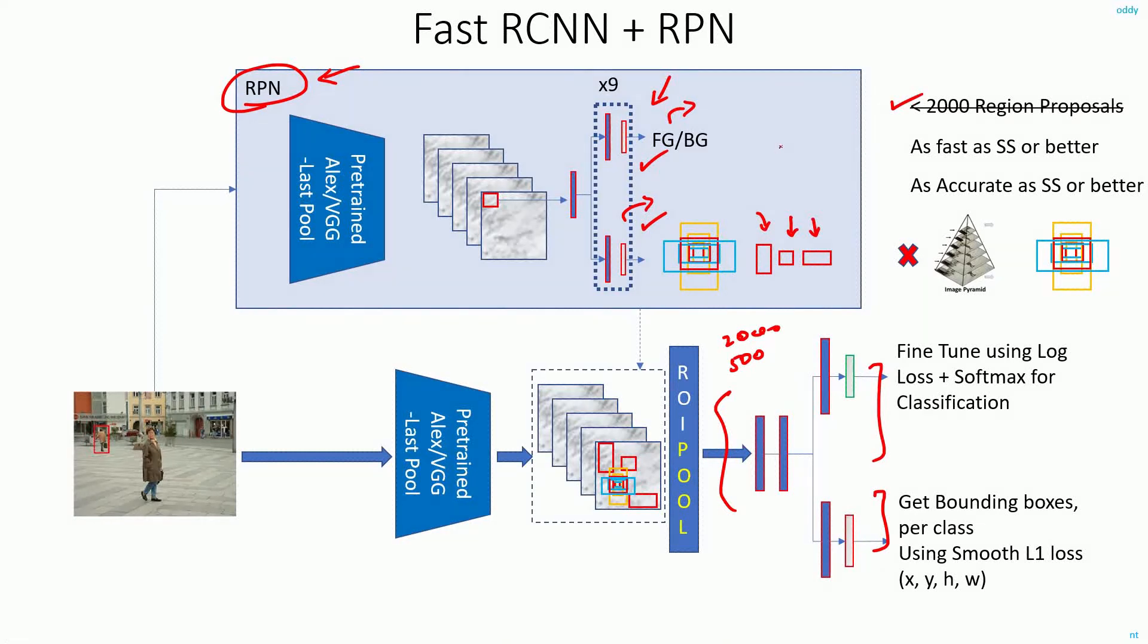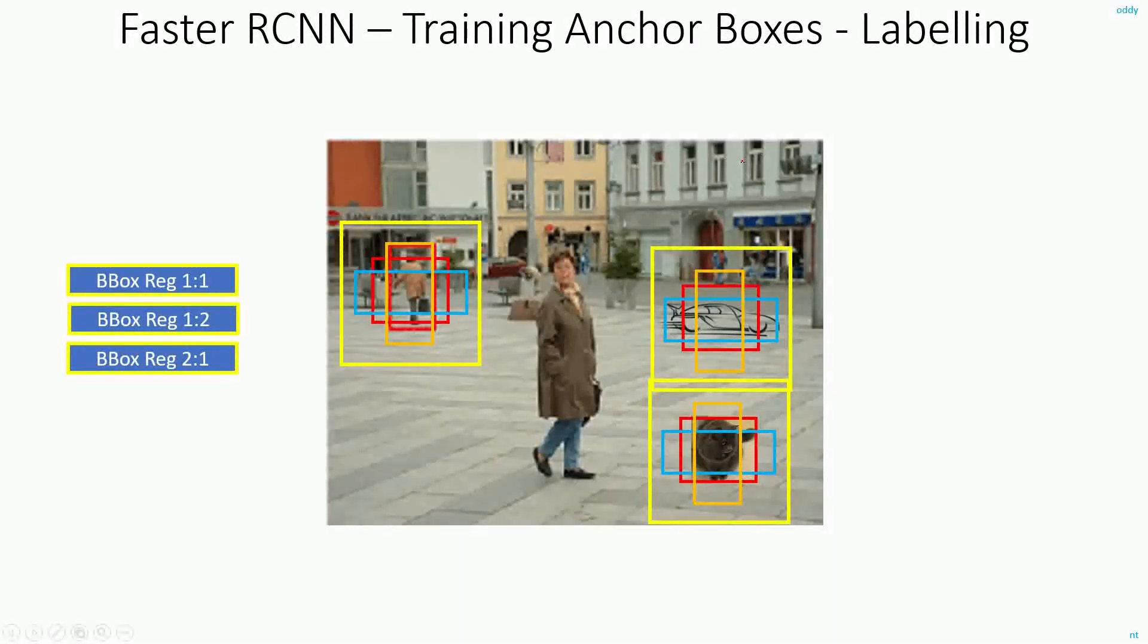Now let's quickly discuss how we are going to do the labeling for the anchor boxes. For example, if this is the image and this is the sliding window position, here what will happen is, to this orange box I will label this as foreground, and the red and the blue box I can label it as background.